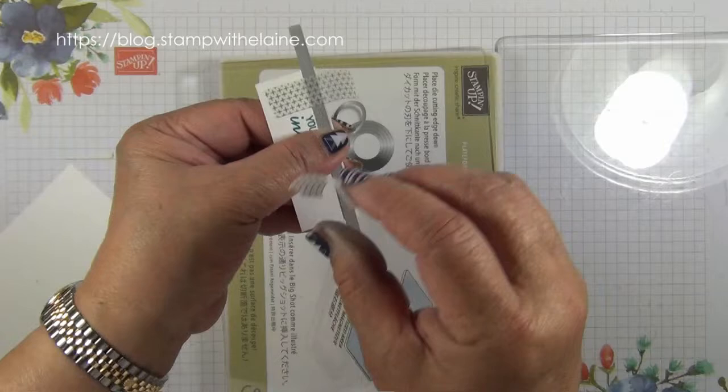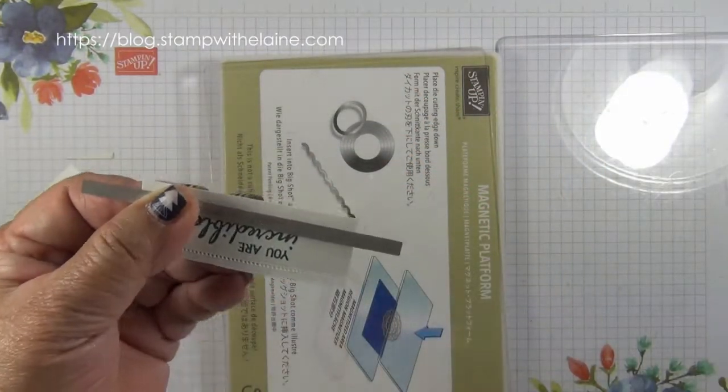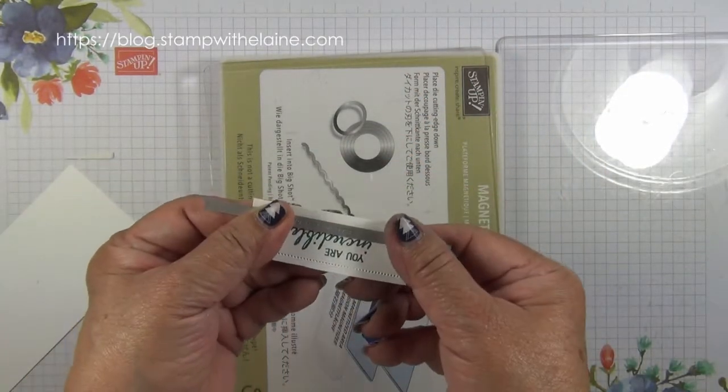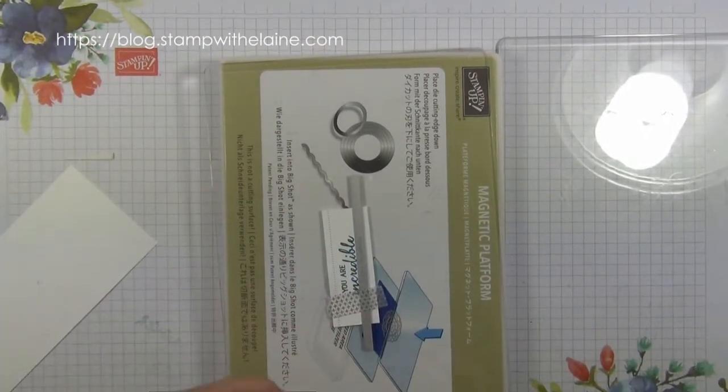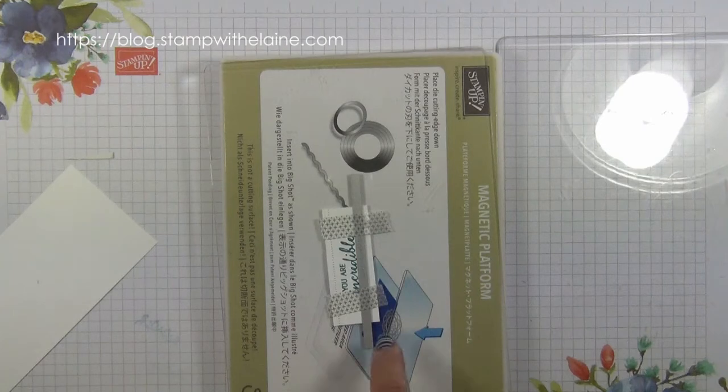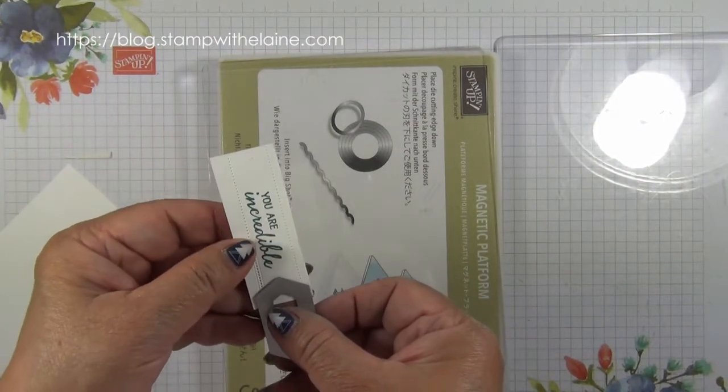Do the same at the opposite end. Line it up with the word there so you know it's straight. Pop your washi tape on and run it through the big shot a second time. Now you've got your stitched effect on both sides.